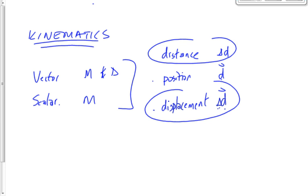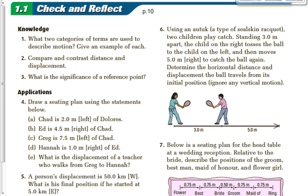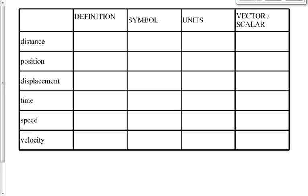We had some homework on page 10, questions one to seven. Let me know which ones you had trouble with and we'll go over those. We won't spend time on the ones you had no trouble with. Now let's define three more terms: time, speed, and velocity.